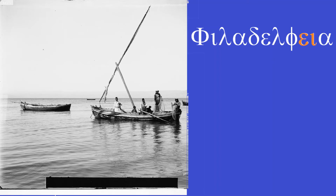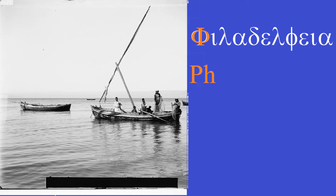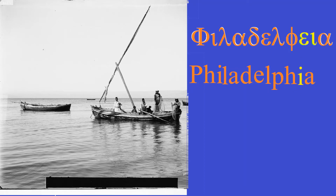Our next example has a diphthong with the same sound as the last one. Towards the end of the word we have epsilon-iota — those two vowels — and the iota wins again, giving us that long-E sound. Let's sound this word out: 'Philadelphia.' This is the ancient city of Philadelphia, which we also have in the United States.